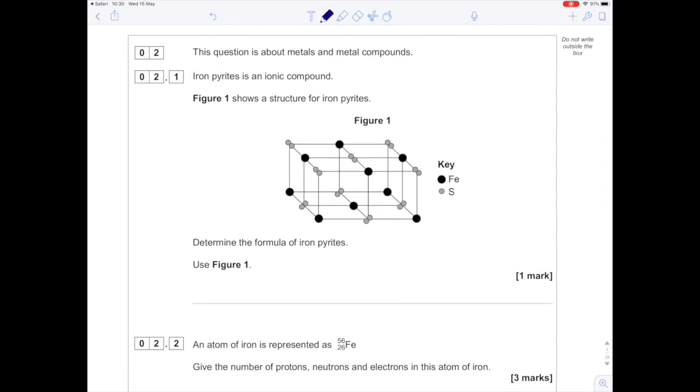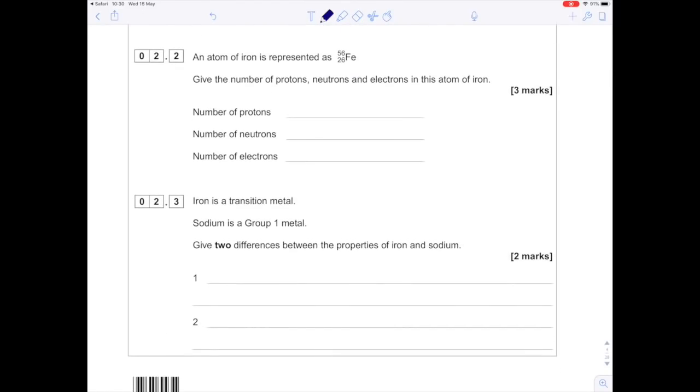This question is about metals and metal compounds. Iron pyrites is an ionic compound. Looking at Figure 1, the big black ones are iron, the small grey ones are sulfur. There's two of them. When you write a formula the metal always comes first, which is why the formula is FeS2. An atom of iron is represented as 56/26 Fe. The atomic number is 26, which equals protons and electrons. To work out neutrons, we do 56 minus 26 to get 30.